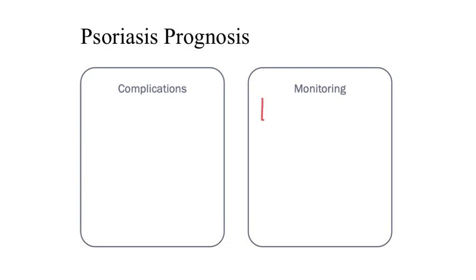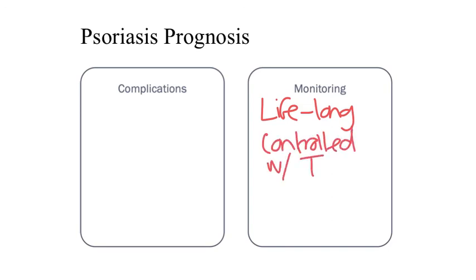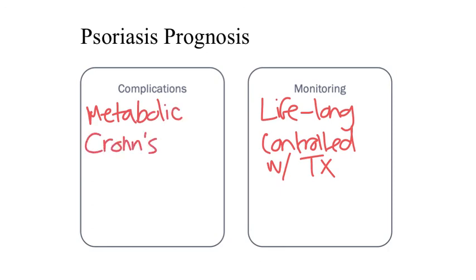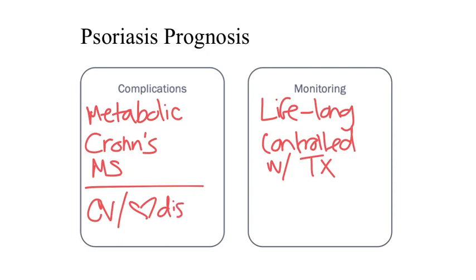Psoriasis is a lifelong condition but can be well controlled with treatment. There are some comorbidities that commonly occur in individuals with psoriasis, including metabolic syndrome, Crohn's disease, and multiple sclerosis. There is also an increased risk of cardiovascular dysfunction and heart disease, making heart and vascular function an important monitoring parameter over time.